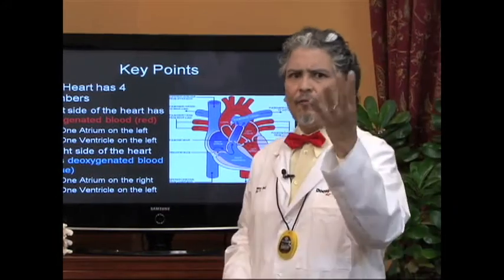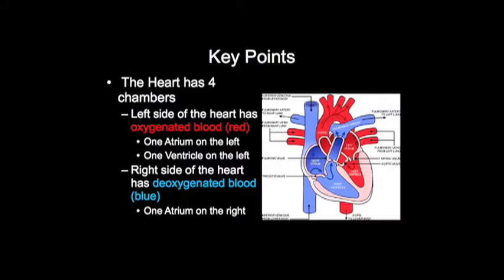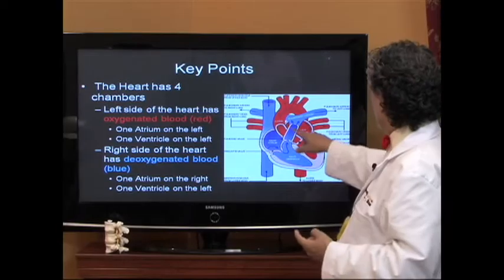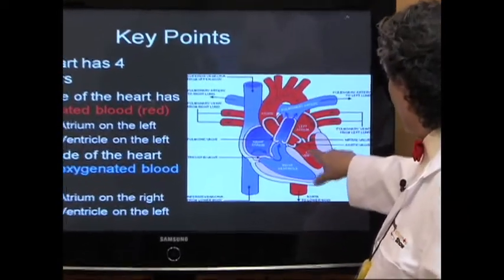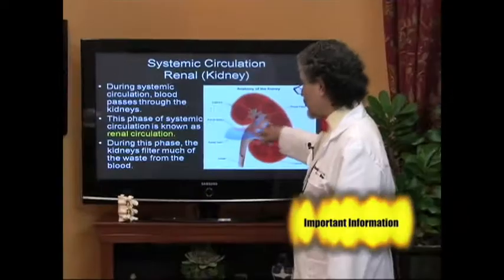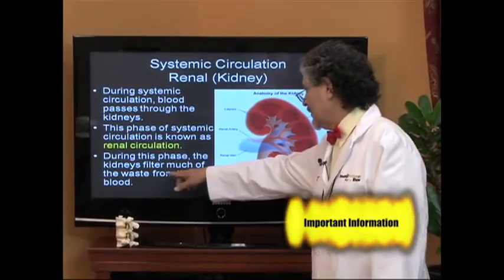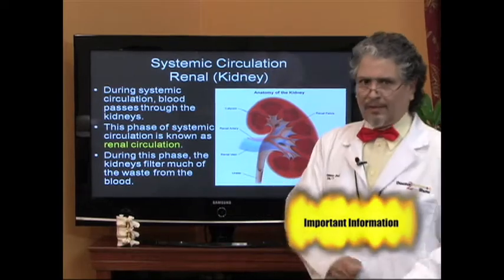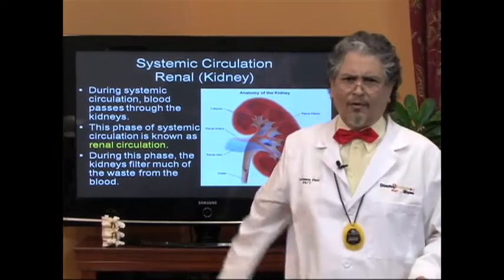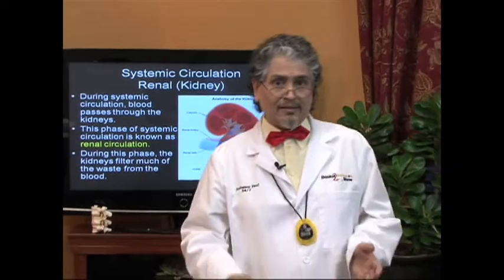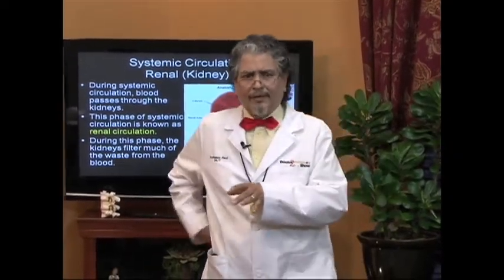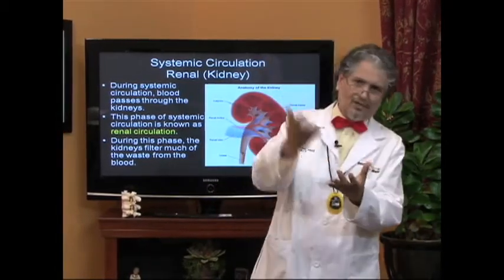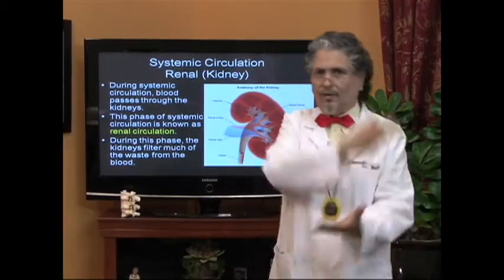Now the heart has four chambers. The left side of the heart is the oxygenated blood, which is red, and you can see that here. There's the left atrium, the left ventricle, and the aorta. The kidney is involved in the filtering of much of the waste from the blood — it's a critical organ. Many of you know about people undergoing dialysis. The reason for that is their kidneys are not functioning properly, and so the dialysis machine has to function like a kidney to filter out all that waste.